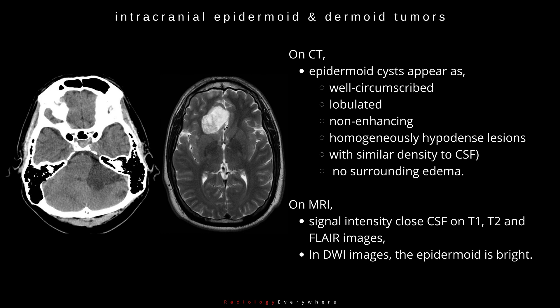On MRI, epidermoid cysts have signal intensity close to that of CSF on T1, T2, and FLAIR images. However, on DWI images, the epidermoid is bright.